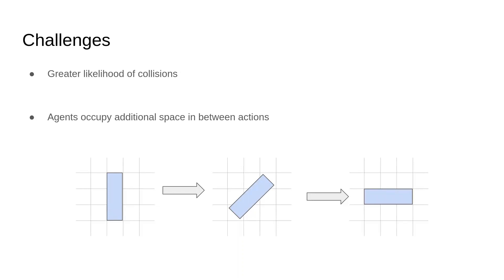Additionally, we have to consider the space occupied by an agent during movement. In the figure below, you can see that in between the actions of the agents rotating from facing north-south to facing east-west, the agent occupies the upper right and lower left corner cells. So we have to consider this additional information while planning to ensure collision-free paths.